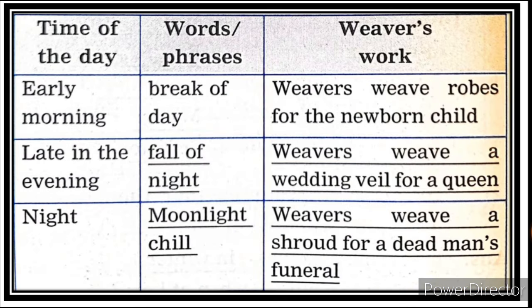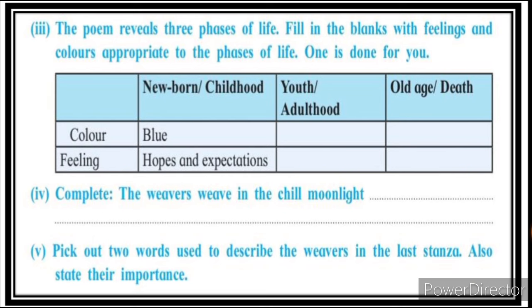Completing the table of times of day: Early morning / break of day — weavers weave robes for the newborn child. Late in the evening / fall of night — weavers weave a wedding wheel for a queen. Night / moonlight / chill — weavers weave a shroud for a dead man's funeral. The poem reveals three phases of life.